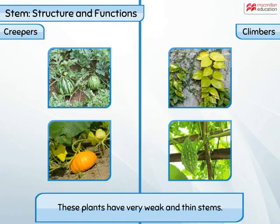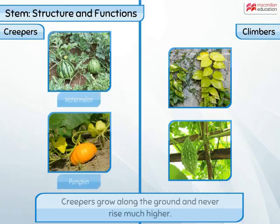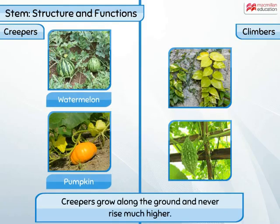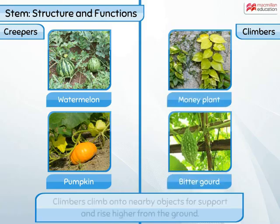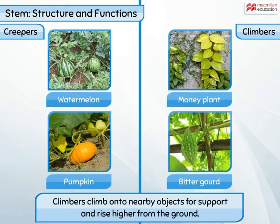Another category of plants that have very weak and thin stems are creepers and climbers. Creeper plants like watermelon and pumpkin grow along the ground and never rise much higher, while climber plants like money plant and bitter gourd climb onto nearby objects for support and rise higher from the ground.